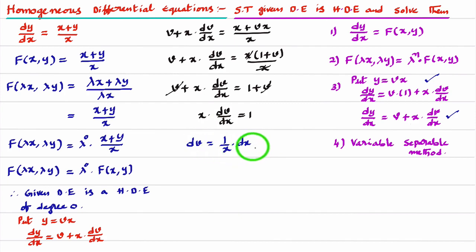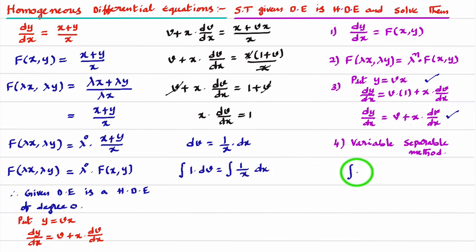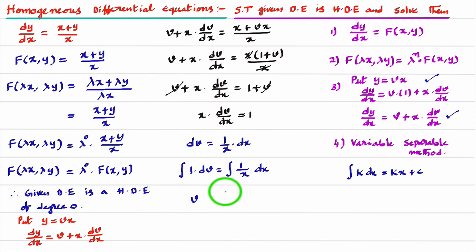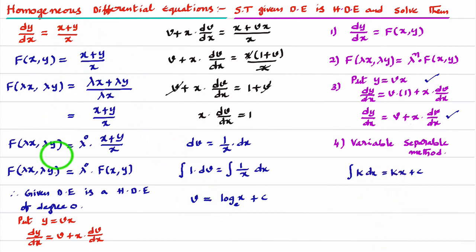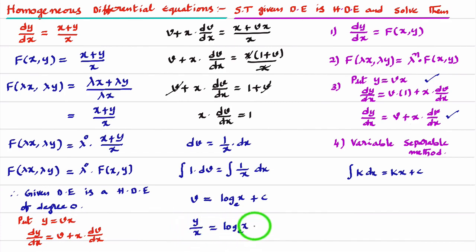Now we integrate both sides. The integral of dv equals the integral of (1/x)·dx. Using the formula, integral of 1·dv = v, and integral of (1/x)·dx = log x (base e). Adding the integration constant c on the right-hand side gives v = log x + c. Since v is not part of the original question — we introduced y = vx, so v = y/x — we substitute back: y/x = log x + c. This is the solution of the given differential equation.